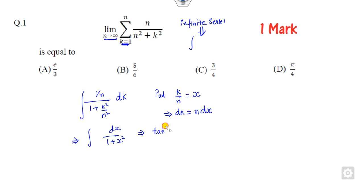This is tan⁻¹(X). Since the limit starts from infinity and goes to 1, the answer is tan⁻¹(∞) which is π/2 minus π/4. So the right answer is π/4. Always try to convert the infinite series into integration form and then solve it.